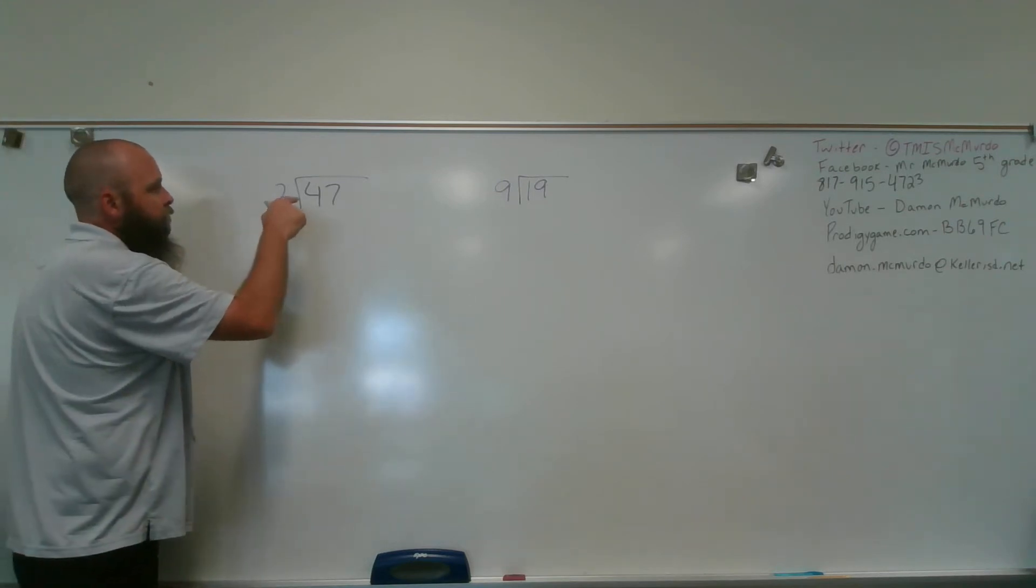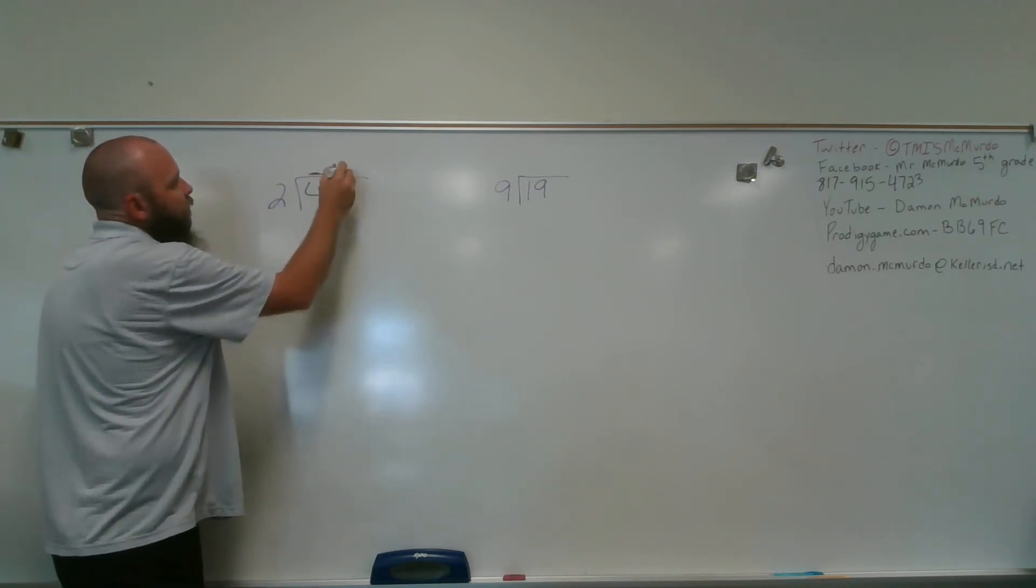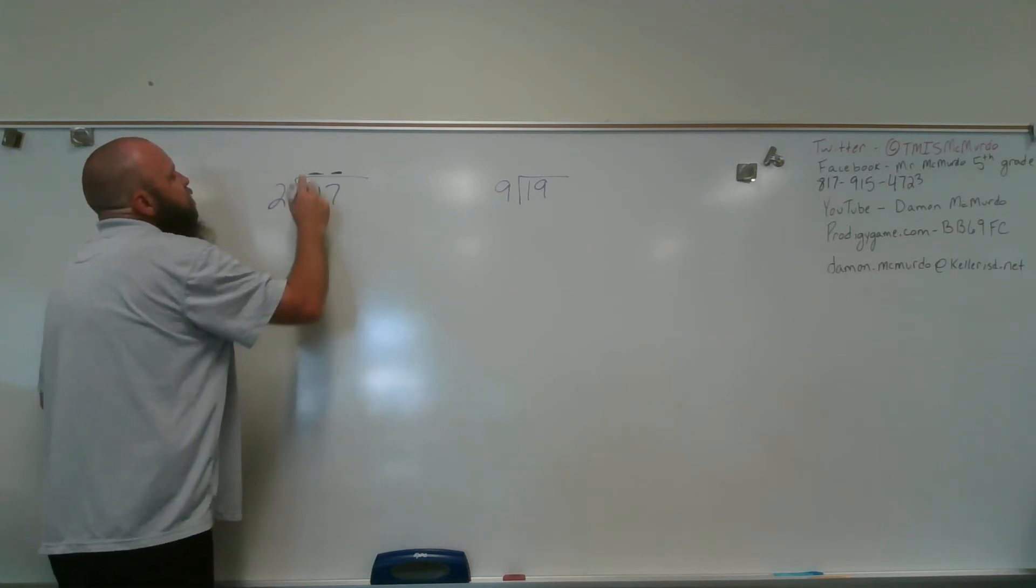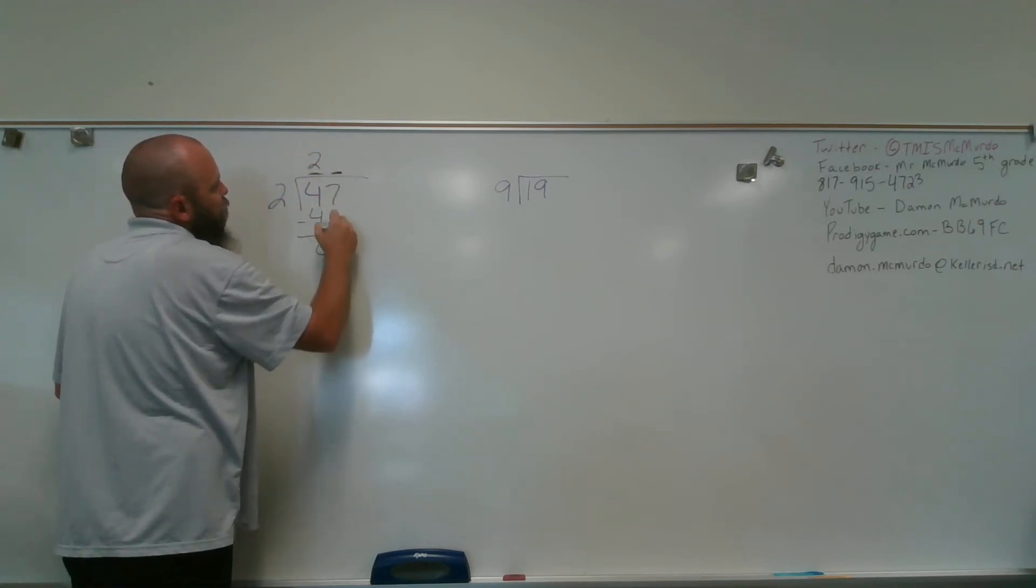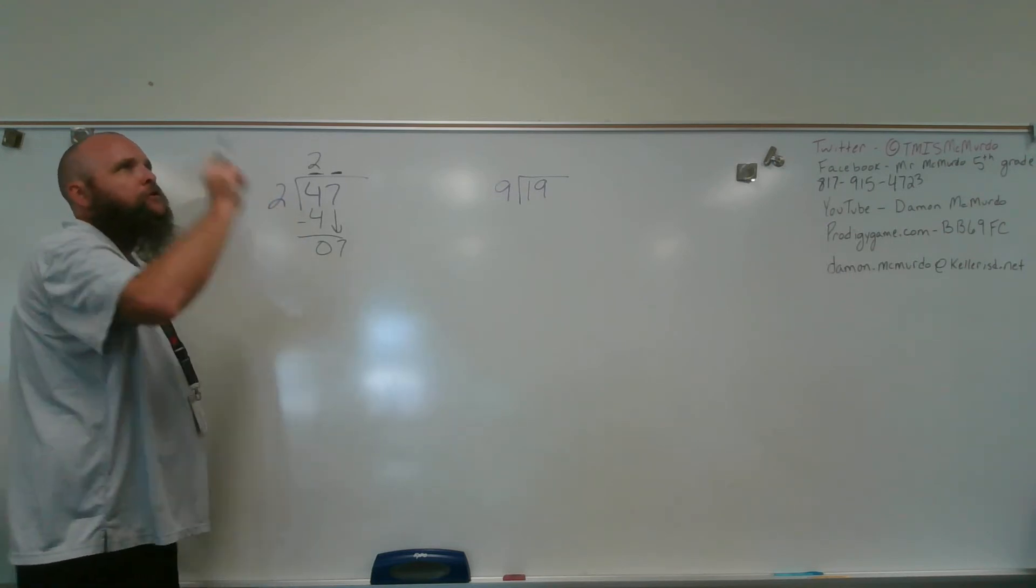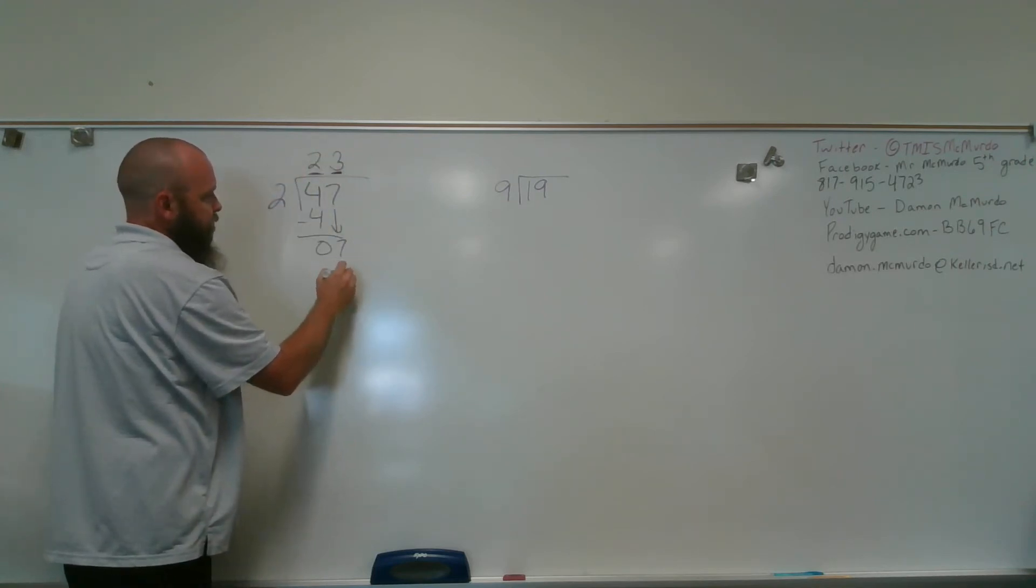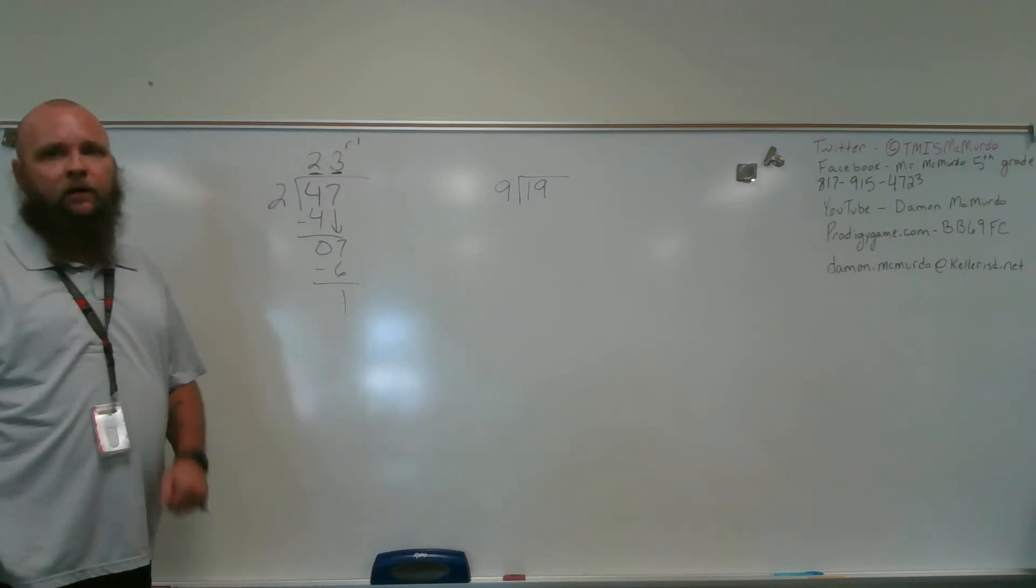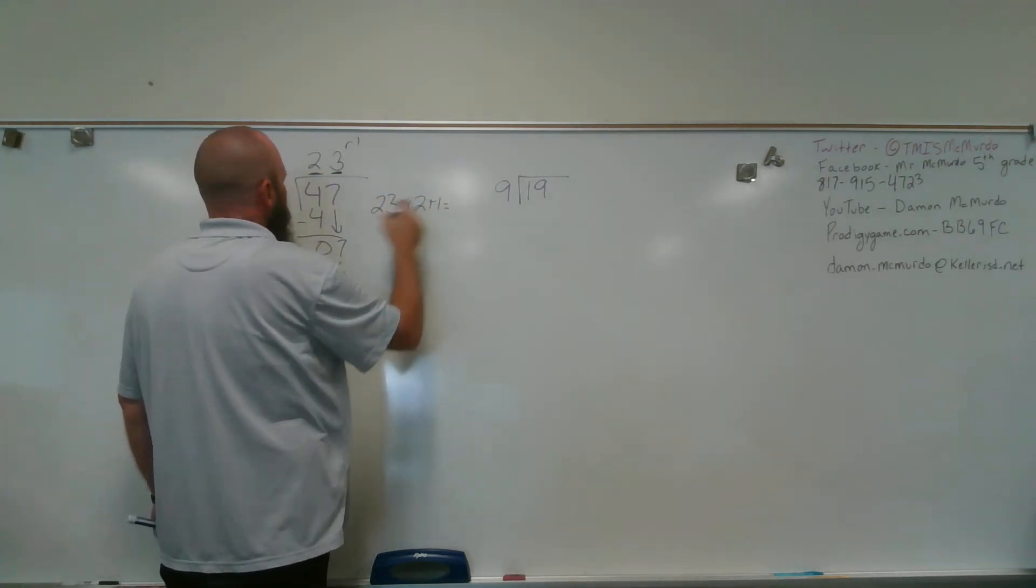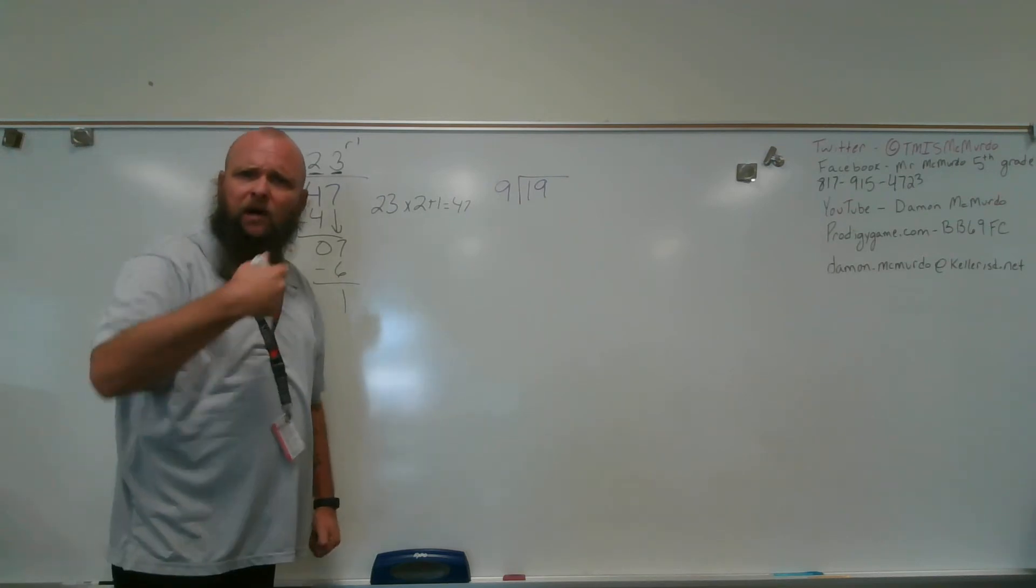47 divided by 2. Does 2 go into 4? Yes. That means I'm going to have a two-digit quotient. I know it's going to go into 4, so I also have to have something above the 7. 2 goes into 4, 2 times, 2 times 2 is 4, subtract, I get a 0, I bring down the 7. Does 2 go into 7? Yes. Not evenly, but yes it does. 2, 4, 6, 8. Boom, I have to have 6, so that's 3. 3 times 2 is 6, subtract, I get 23, remainder 1. And I would take 23 times 2 plus 1, and if I did everything correctly, that would equal 47. I'm not checking it, you check it. You're the boss of me, I'm the boss of you.